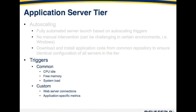Free memory is another trigger — anyone who has a Java or Tomcat app knows they can be quite memory intensive, so you can use free memory on an instance as a trigger to scale both up and down. Anyone who's run the top command is familiar with the load metric. The load.midterm, which is the five-minute running average of system load, is a very common metric to use for scaling both up and down.